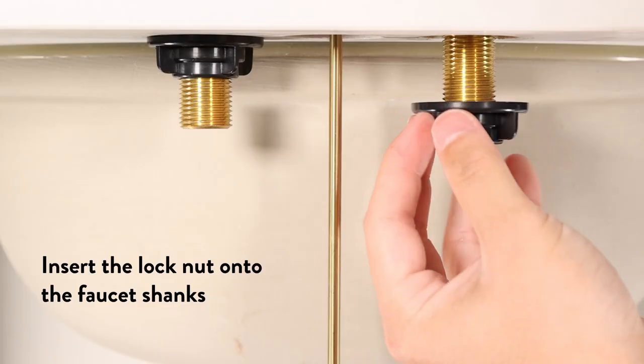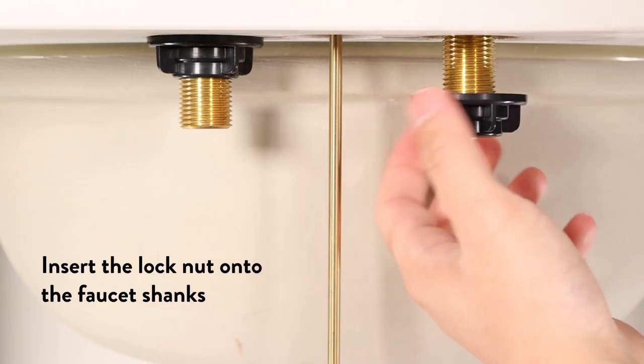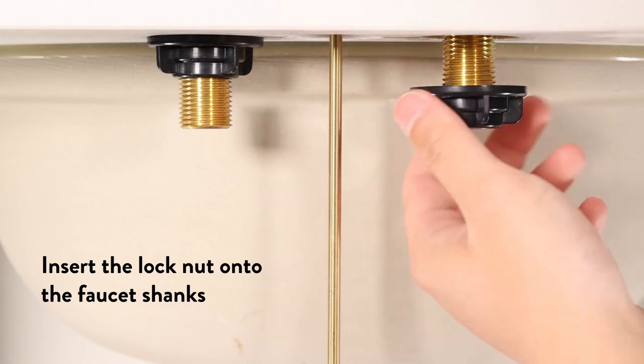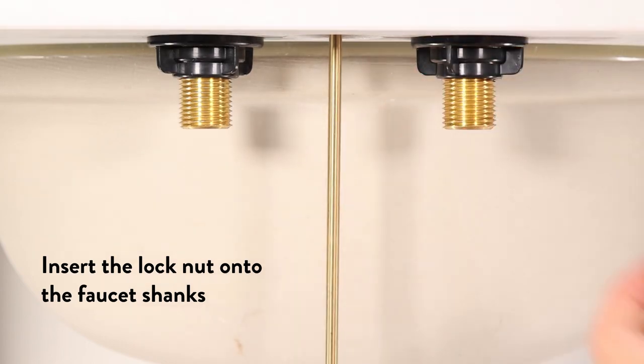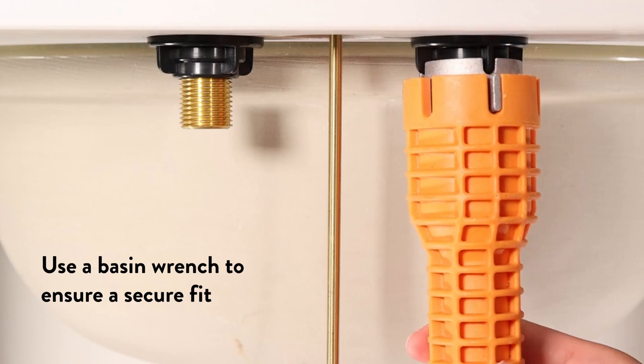From below the sink, insert the lock nut onto the faucet shanks. Use a basin wrench to ensure a secure fit.